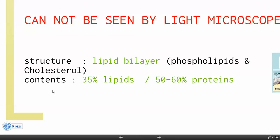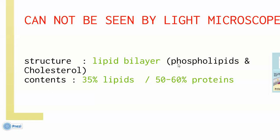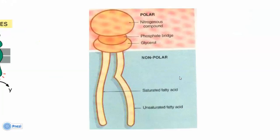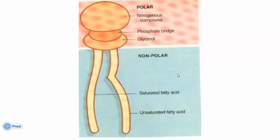The plasma membrane consists of a lipid bilayer — phospholipid and cholesterol. Its contents are 35% lipids and 50 to 60% proteins. The phospholipid consists of a polar head attached to glycerol through a phosphate bridge, and non-polar tails — one saturated and one unsaturated — linked to glycerol through covalent bonds.